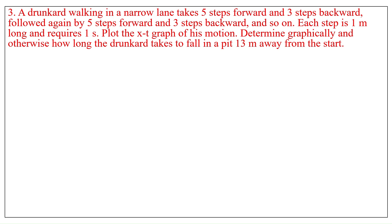Question 3. A drunkard walking in a narrow lane takes 5 steps forward and 3 steps backward, followed again by 5 steps forward and 3 steps backward, and so on. Each step is 1 meter long and requires 1 second. Plot the X-T graph of his motion. Determine graphically and otherwise how long the drunkard takes to fall into a pit 13 meters away from the start.